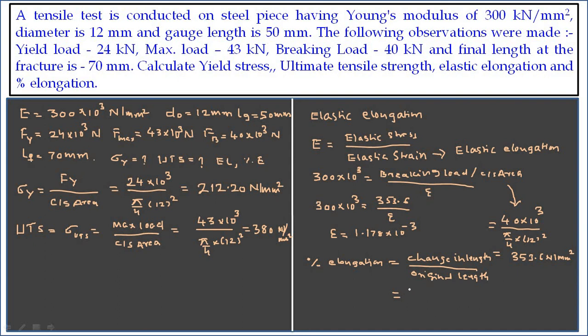The final length after fracture is found to be 70 mm and my original length, the gauge length, is 50 mm. So percentage elongation equals 70 minus 50 divided by 50, which gives us 40%.